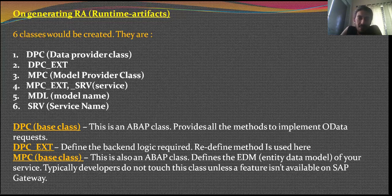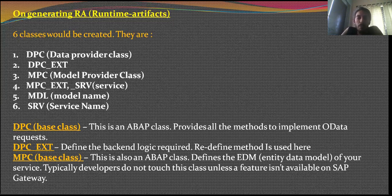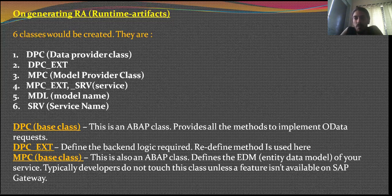The first one is DPC, your base class — this is an ABAP class that provides all the methods to implement your OData request. The second one is the DPC extension, where you define the back-end logic required. You can also redefine your OData project here. Most of your application logic is done in the DPC extension, and this is where developers can go wild with their coding.